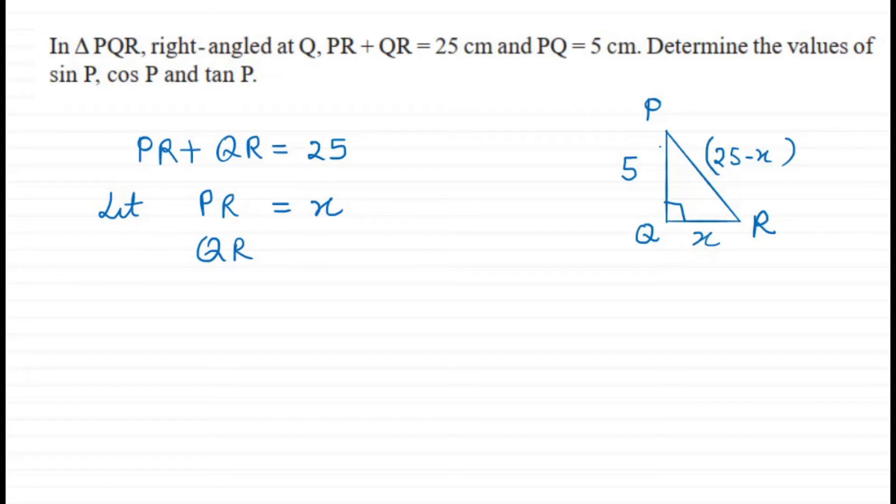Now we can use the Pythagorean theorem to solve it. PR squared equals PQ squared plus QR squared. Simply put the values and see what we get.